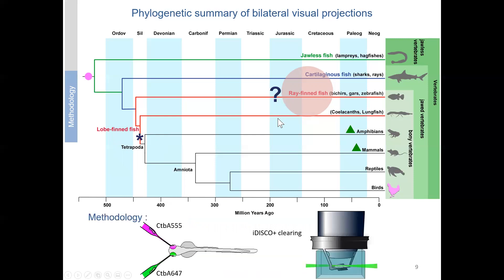To test this, we selected different fish and injected a cholera toxin coupled to an Alexa fluorescent dye — an anterograde and retrograde tracer injected into the eye that travels along the optic nerve into the brain. The aim was to label all retinal projections leaving the eye as unbiasedly as possible. We then cleared the brains and optic nerves and reconstructed all projections in three dimensions using light sheet fluorescence microscopy.